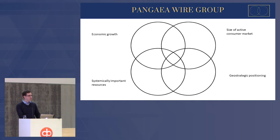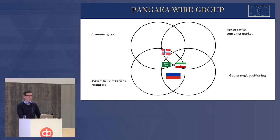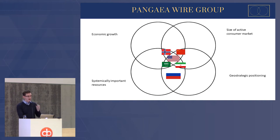If we were to plot different nations in the world to see where they fit on this map, I put Saudi Arabia here, Russia there, Iran somewhere there, Norway somewhere there, China sort of here-ish. And right now we have the United States right in the middle. There's a reason why the United States is in the middle of this four-circle matrix, and that goes back to their history.